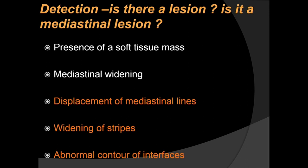Now, is there a lesion, is it a mediastinal lesion? There are a few things we need to note. The presence of a soft tissue mass or mediastinal widening makes a lesion obvious, but there are finer things we must note which will not be very obvious, such as displacement of mediastinal lines, widening of stripes, and abnormal contour of interfaces. Most of these signs appear on the chest radiograph, from which we progress to CT.